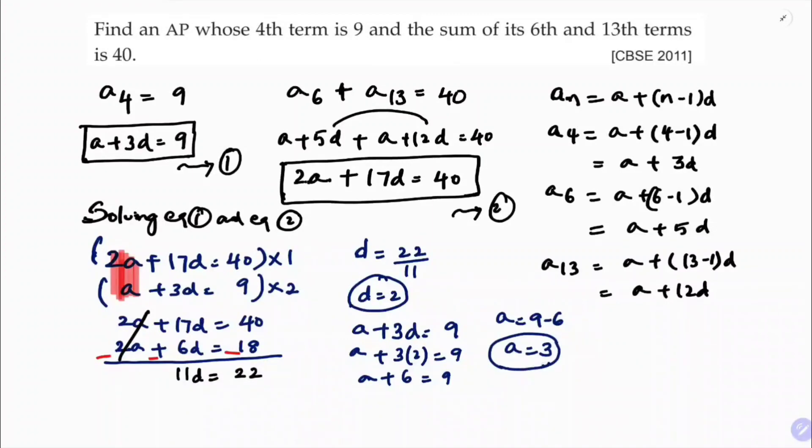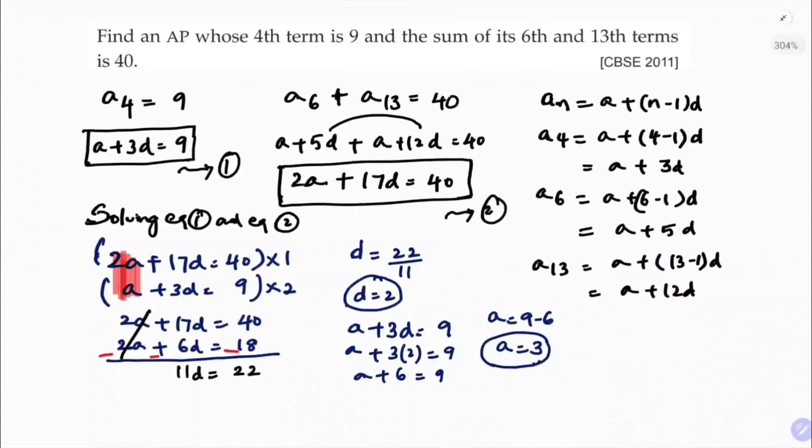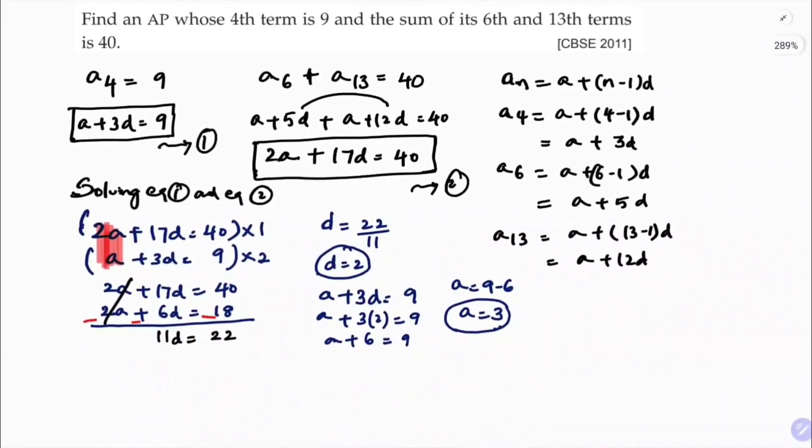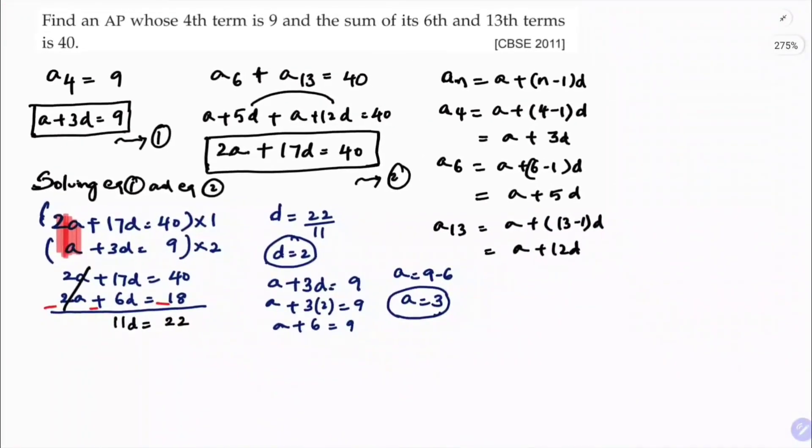D is 2 and A is 3. We need to find the AP. So we need to find first three terms, A1, A2, A3. So A1 is A, which is nothing but 3. A2, A2 is A plus 1D or A plus D. A is 3 and D is 2, so which is 5.